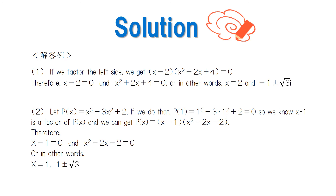Now let's check our answers. First, look at problem number one. If we factor the left side, we get (x minus two) times (x squared plus two x plus four). Therefore, x minus two equals zero and x squared plus two x plus four equals zero. In other words, x equals two and negative one plus or minus square root of three times i.